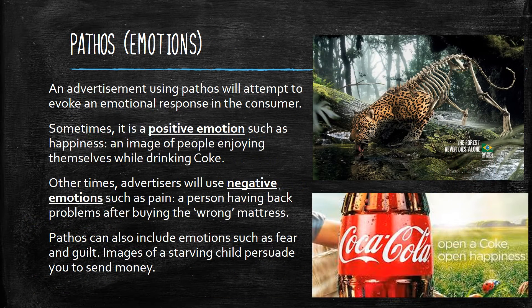So pathos is appealing to our emotions. On the side here, the top ad says 'the forest never dies alone,' and you can see this beautiful animal that looks like it's slowly dying. There's a Brazilian flag, and I'm assuming it's linking to the Amazon, trying to say if we don't stop hunting animals and deforestation — cutting down trees — we're not going to have any forest left. It's appealing to our emotions, making us feel sad, like 'I don't want a forest without these beautiful animals.'